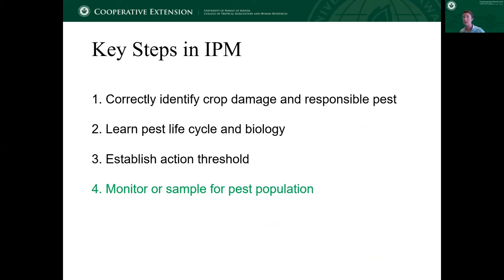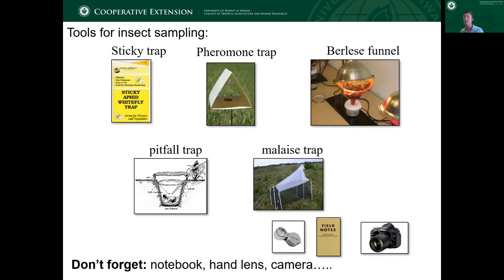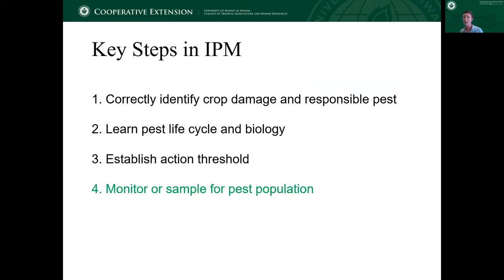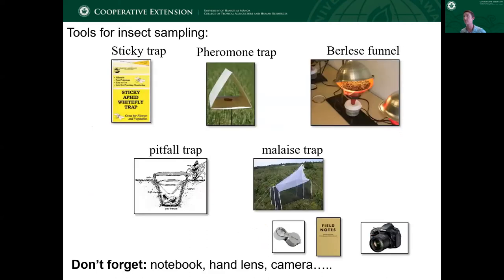Next, you want to monitor and sample for pest populations. You establish your action threshold and then need to go out and monitor to make sure you're not exceeding that for the particular pest of interest. For sampling, there are a number of tools you can use — things like basic sticky traps or pheromone traps that have pheromone lures, pitfall traps, and other kinds of examples — depending on the particular pest you're trying to monitor for.